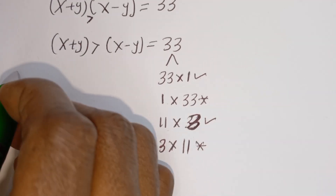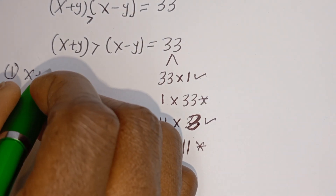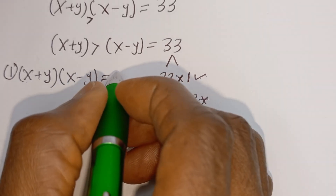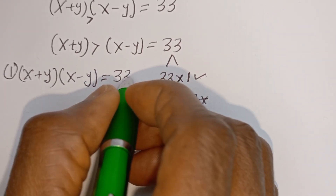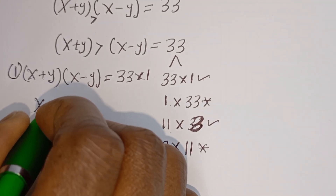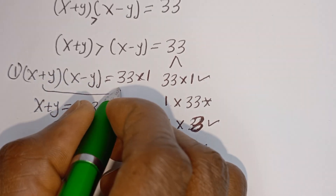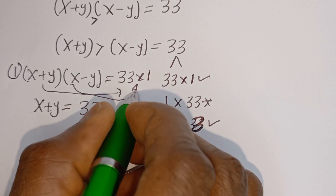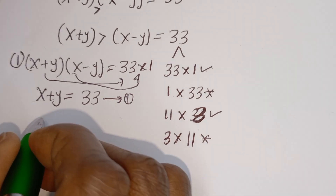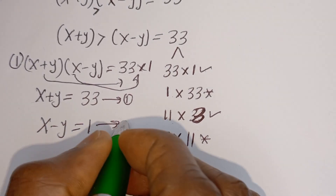Therefore, our equation becomes: for the first case, (X + Y)(X - Y) = 33 × 1. So X plus Y equals 33 — call this equation 1 — and X minus Y equals 1 — call this equation 2.